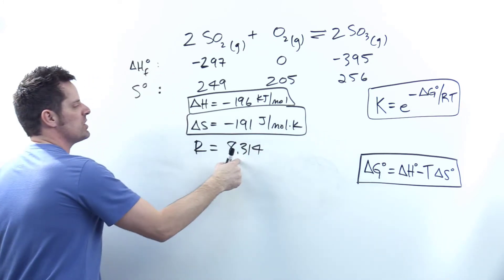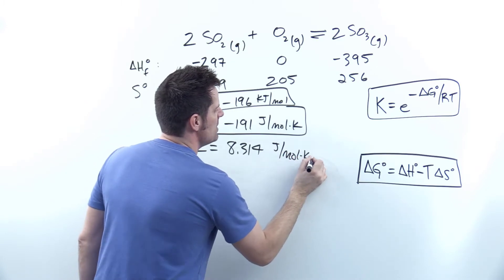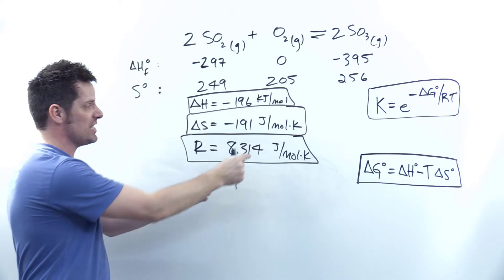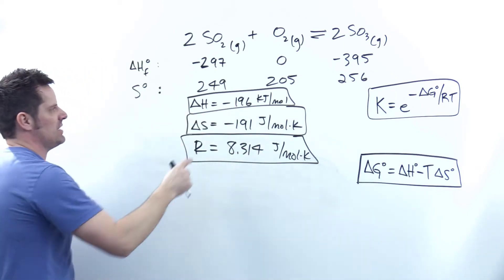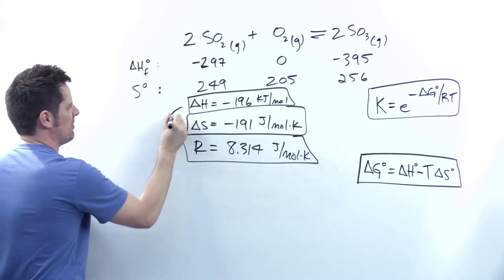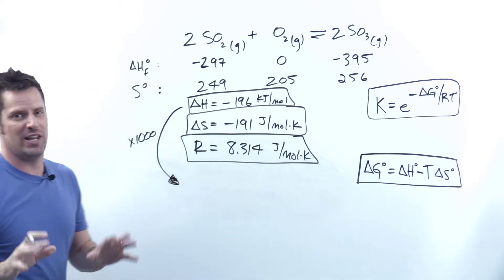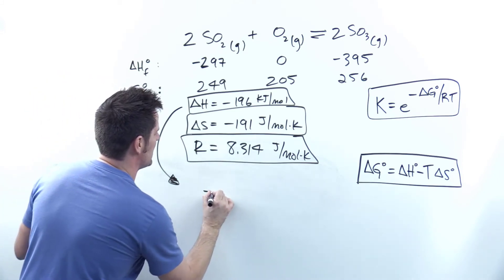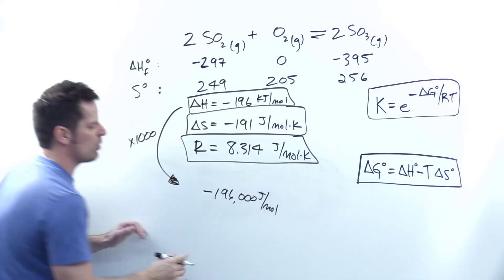R, the ideal gas constant in terms of energy, is 8.314 joules per mole Kelvin. The ideal gas constant will dictate which units we need—it has joules, so I need to push my delta H towards joules. If I multiply this number by 1000, I end up getting delta H as negative 196,000 joules per mole.